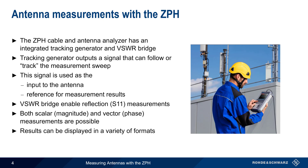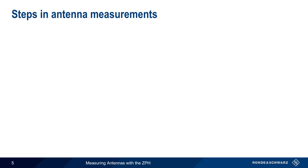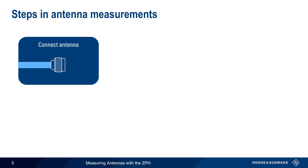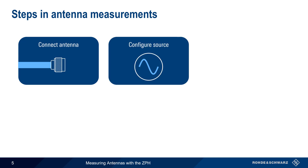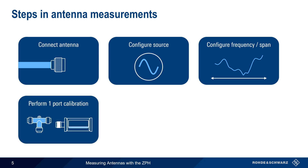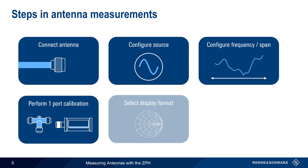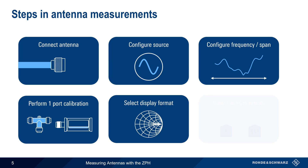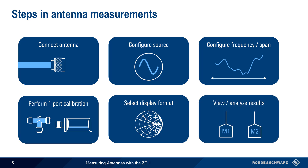In the remainder of this presentation, we'll go step-by-step through how to perform various antenna measurements using the ZPH. There are six basic steps in making antenna impedance measurements: connecting the antenna, configuring the source or tracking generator, configuring the measurement frequency range, performing a one-port calibration, selecting the display format, and viewing and/or analyzing the results.